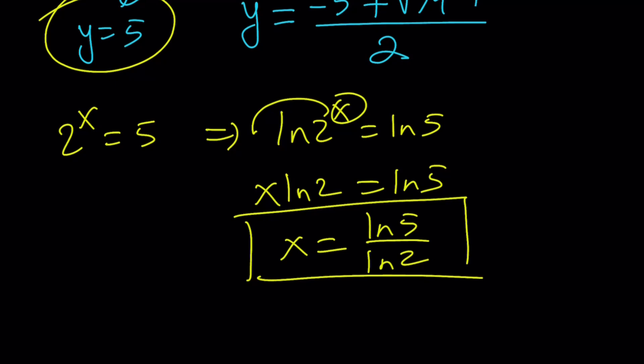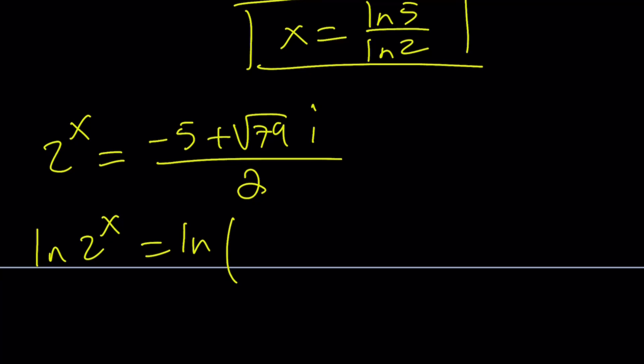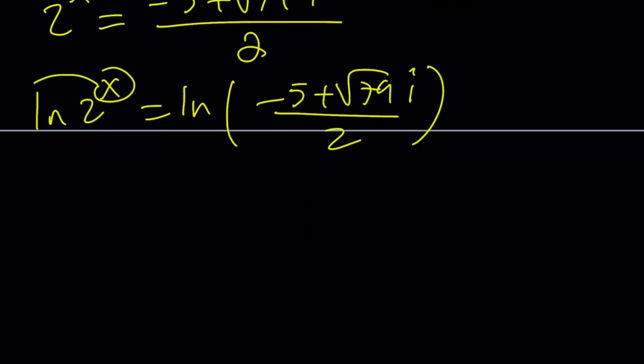But what about the other ones? Let's go ahead and do the same thing. Exact same thing. Well, pretty much. Y equals 2 to the x. And if that's equal to, let's just take one of these. I'll show you how to do one of them. And then the other one is just going to be very similar. We're going to ln both sides. Again, ln 2 to the x equals ln this. And I'm using the positive sign, but you can do the exact same thing with the negative sign. And then move the x. x ln 2. Now, here's the million dollar question. What is the ln of a complex number?